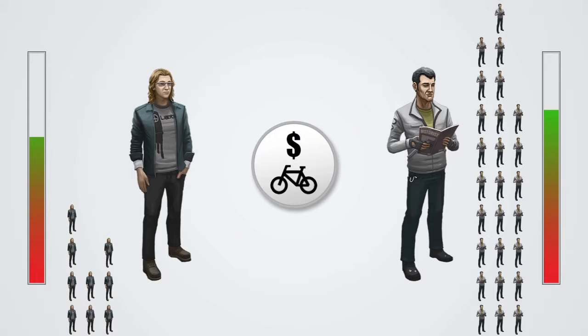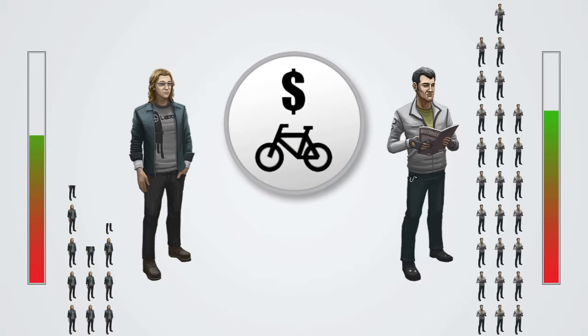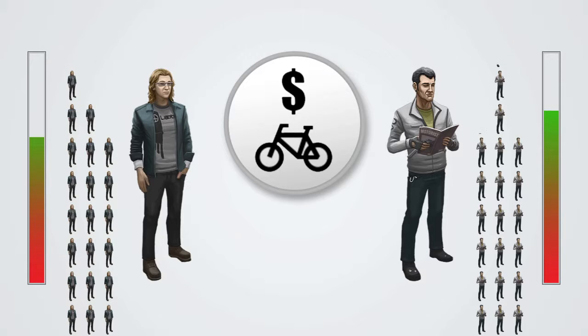I think they're quite interesting from the point of view of the game, because what they do is they allow you to change not just how happy certain groups of voters are at any particular time, but they allow you to change the actual makeup of your country. So for example, if you subsidize bicycles, you'll get more people cycling over time — it's not necessarily that you'll make particular groups of people happy, but you'll reduce the number of motorists, for example. That's quite an obvious one.